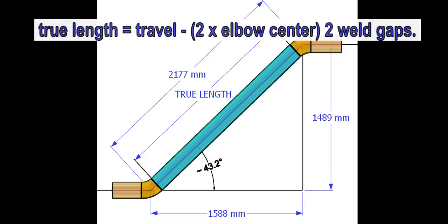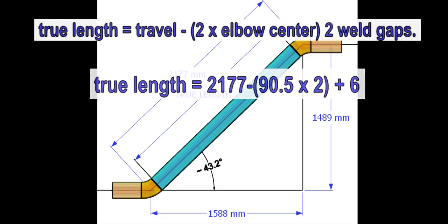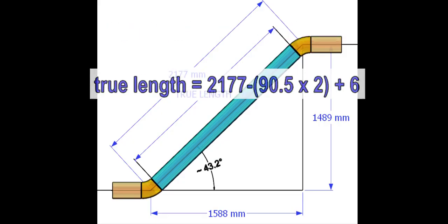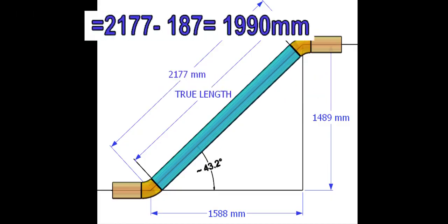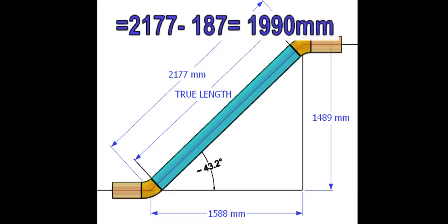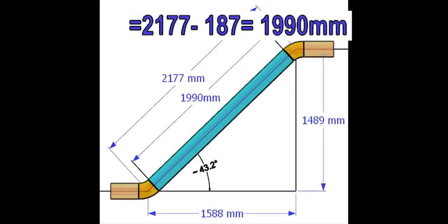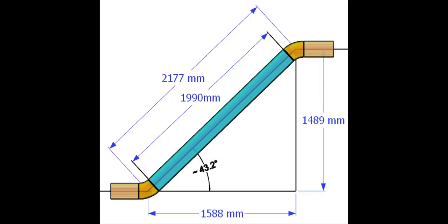The true length formula is the travel minus the sum of two elbow centers and two weld gaps. Here, I assumed one weld gap is 3 mm. The result of the calculation is 1990 mm, and that is the true length of the pipe.